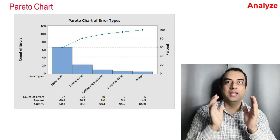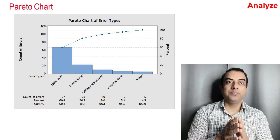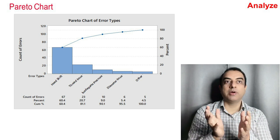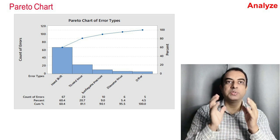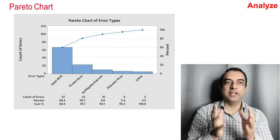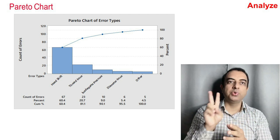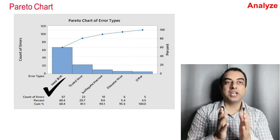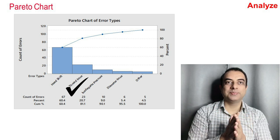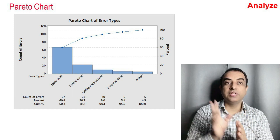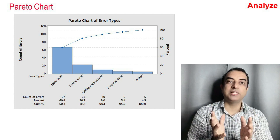The next phase is the Analyze phase, and the basic tool used here is the Pareto Chart, also known as the 80/20 rule — meaning 80% of the problems are due to 20% of the causes. In this picture, the Pareto chart of errors indicates that 81.1% of errors are due to two main causes: head of the shift and thread issues. The project team can focus on these two error types and impact 81.1% of the problem.